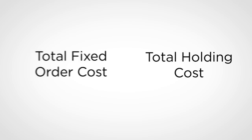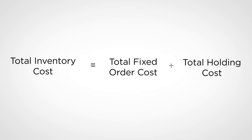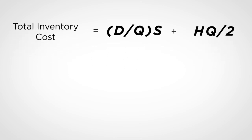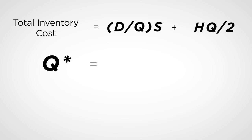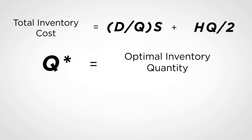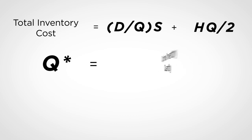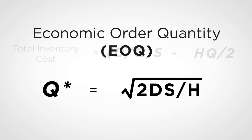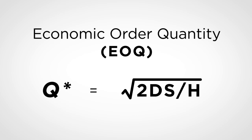Having computed the annual fixed order costs and holding costs, we can calculate the total inventory cost as the total fixed order cost plus the total holding cost, which equals D over Q times S plus H times Q over 2. Our goal is to choose a quantity Q* that minimizes the total inventory cost. Using calculus, the optimal order quantity Q* that minimizes total inventory cost is equal to the square root of 2 times D times S divided by H. This quantity is the optimal order quantity, also known as the Economic Order Quantity, and the formula is also known as the square root formula.